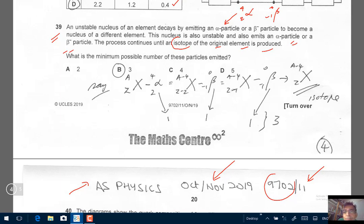So, the important words: either an alpha or a beta negative, and at the end, we have an isotope. What is the minimum possible number of these particles emitted?